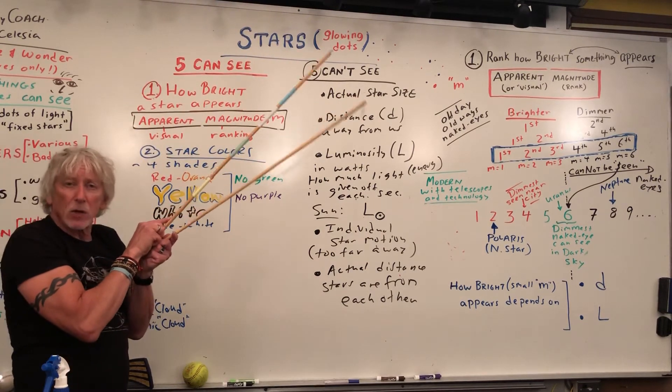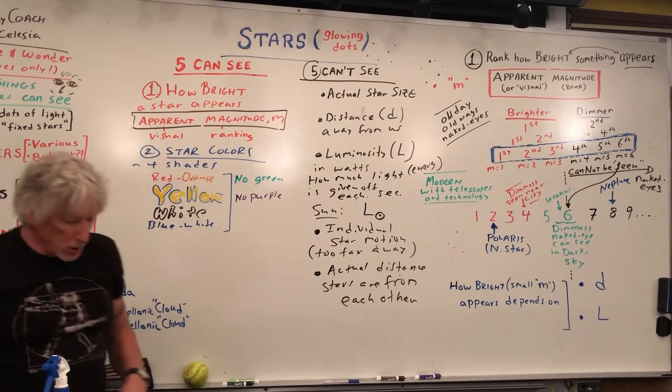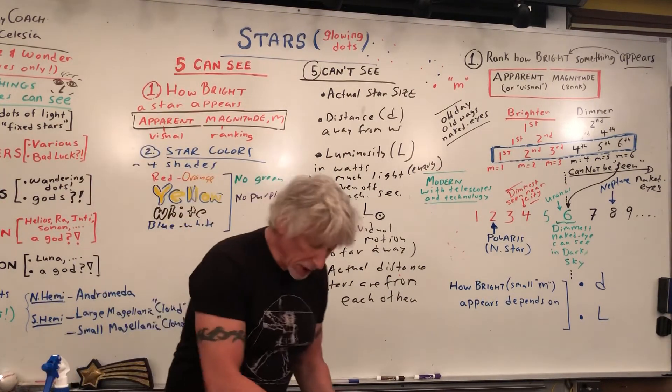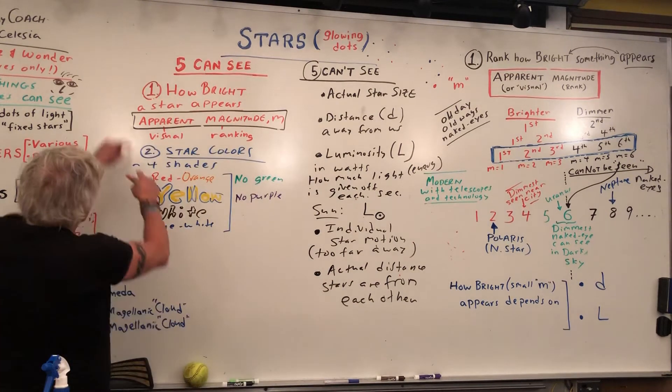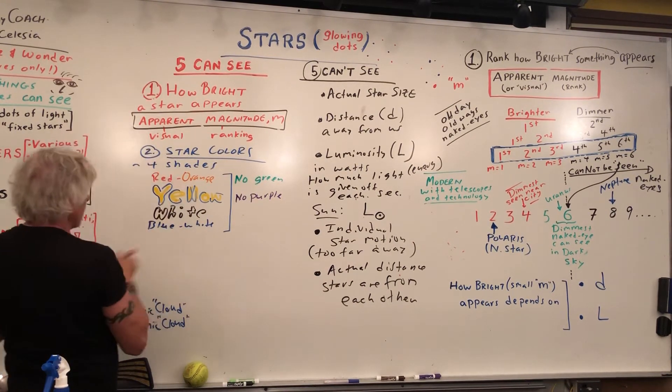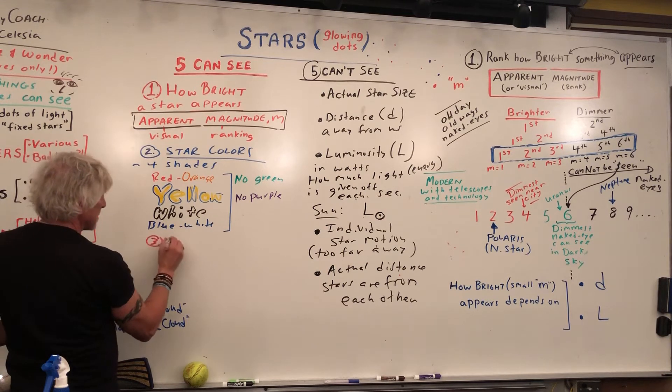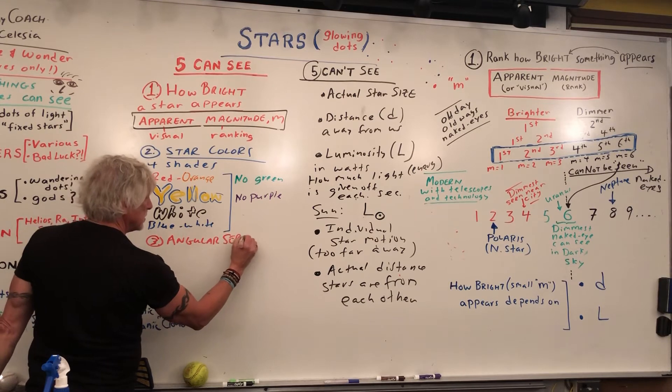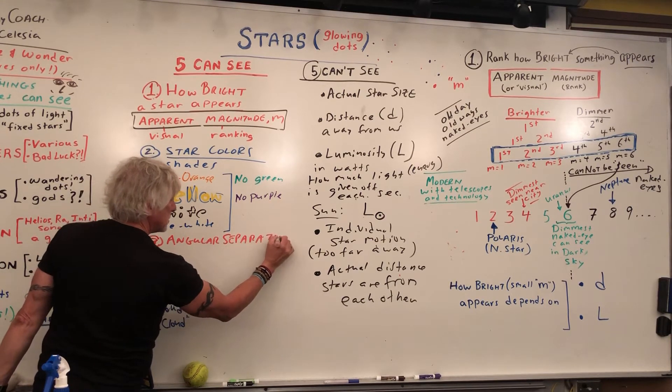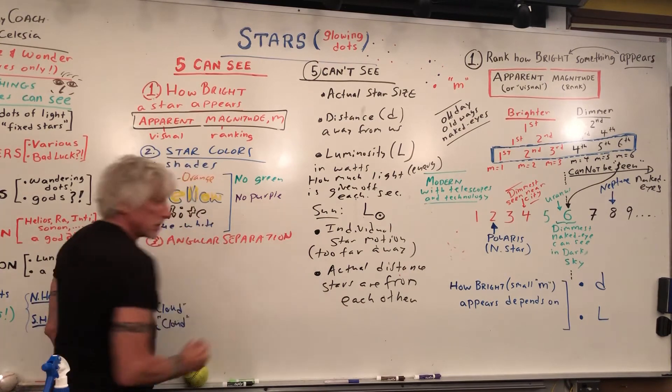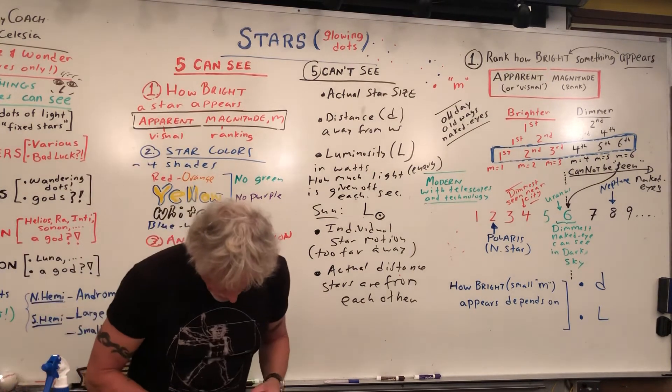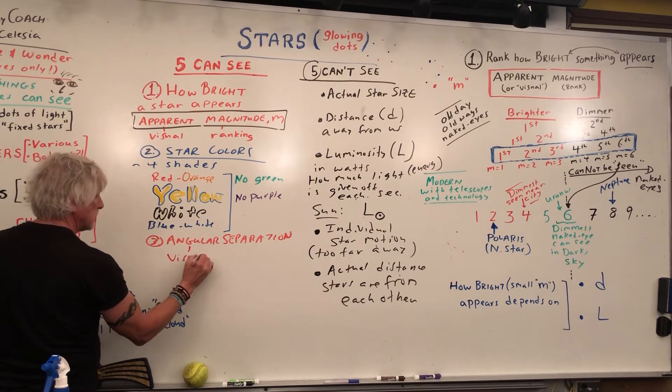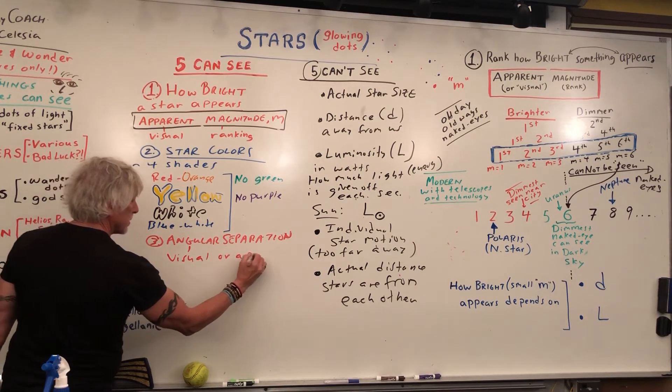And so what you can tell is their visual separation. Some people call it visual separation, some people call it apparent separation. I like to call it angular separation. People call it that too. So I'm going to put up here angular separation. You can tell, you can tell these look closer together, but I don't know if they really are. So number three is, this is an important point, angular separation, also called visual or apparent separation.